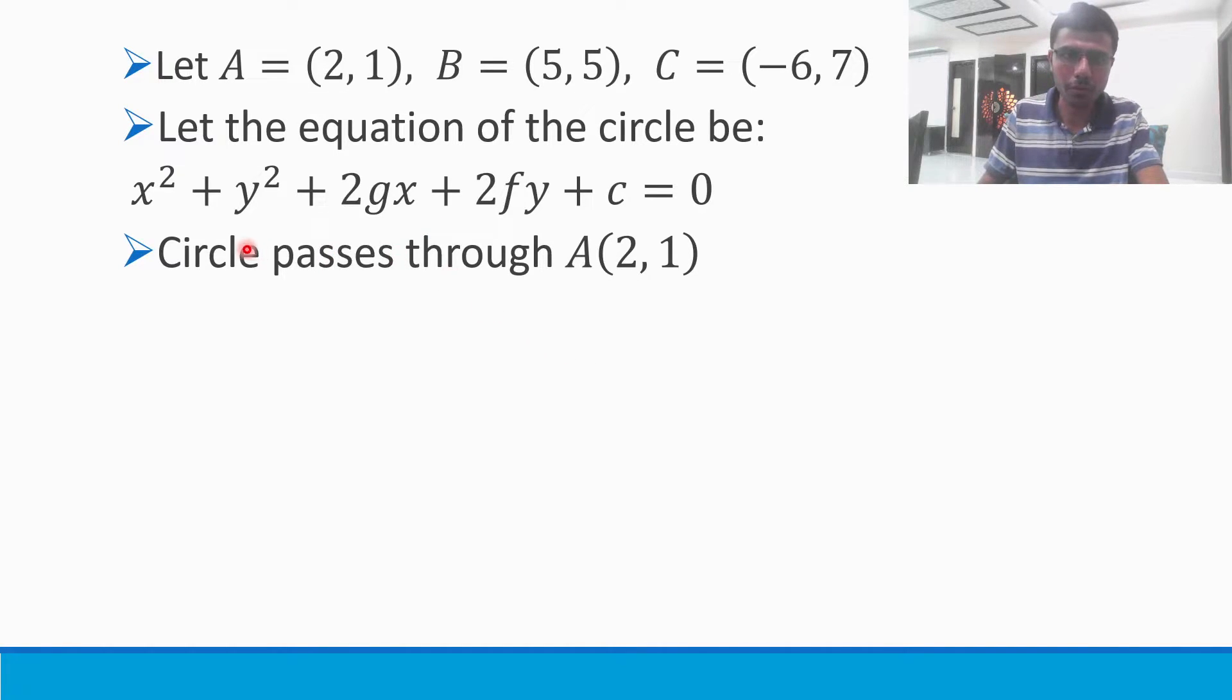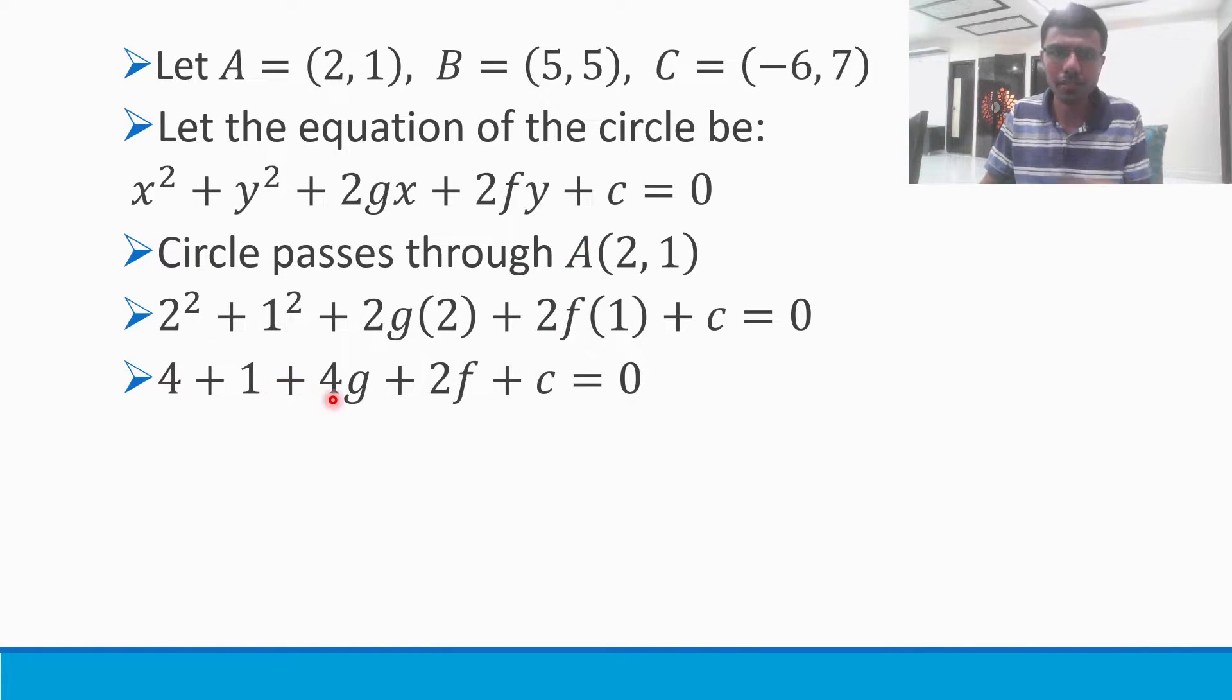If I were to do that, in place of x and y just put 2 and 1. Then simplify: 2² is 4, 1² is 1, 4g plus 2f plus c. Mark this as equation 1.